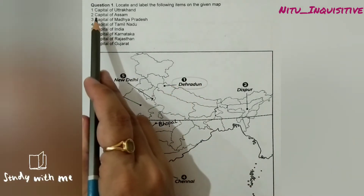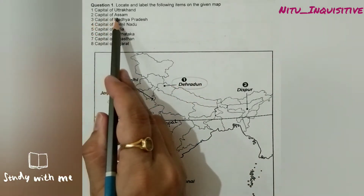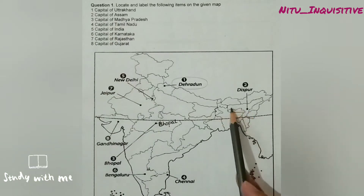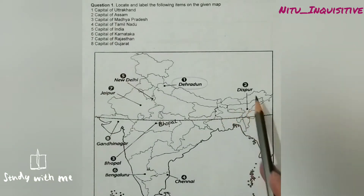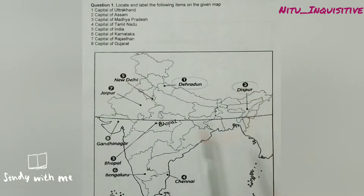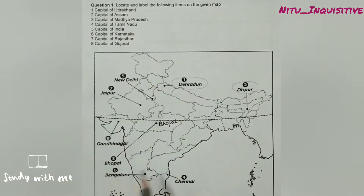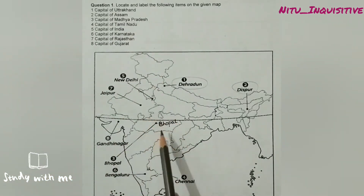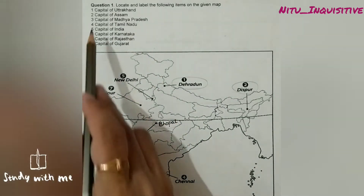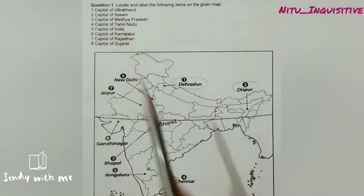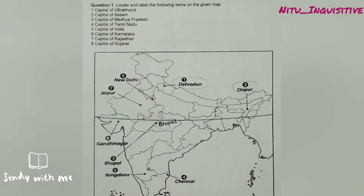Next question is the capital of Assam. The capital of Assam is Dispur. Capital of Madhya Pradesh — the capital of Madhya Pradesh is Bhopal. Capital of Tamil Nadu — the capital of Tamil Nadu is Chennai.